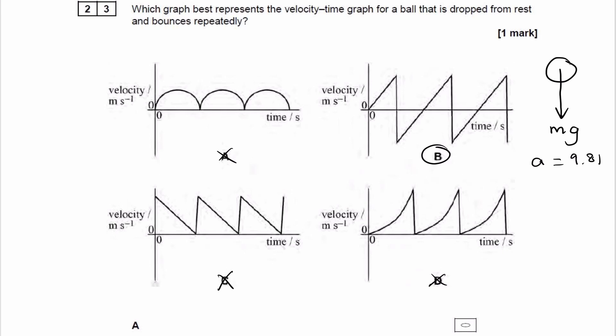The gradient of a velocity-time graph is acceleration, and if, when the ball is in the air, the acceleration is always 9.81 downwards, then the gradient of the velocity-time graph when the ball is in the air should always also be 9.81. And that's what's shown in graph B.